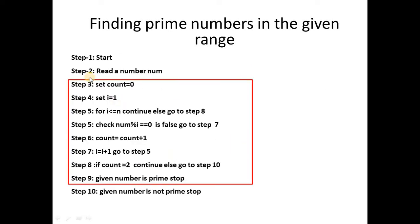The main logic is: read a number, set count equal to zero, then i from 1 to n to find factors. Unless you know the factors, you cannot say whether it is prime. For a range of numbers, this logic must repeat for each number — for 10, for 11, for 12 — incrementing by one each time. So the inner loop must be placed inside an outer loop.